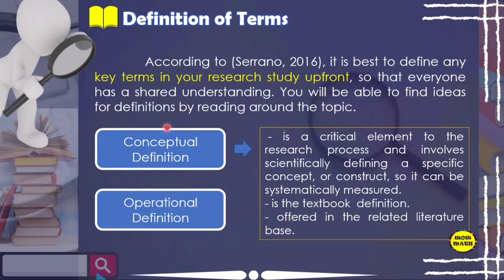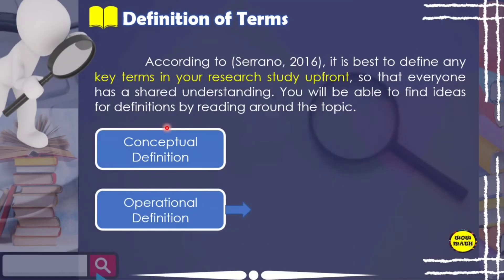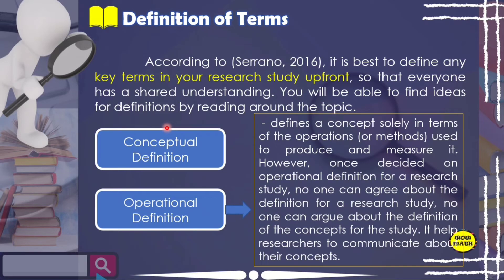In some cases there may be more than one conceptual definition of a construct. So what is the difference between operational definition and conceptual definition? When you say operational definition — sometimes called operational terms — it defines a concept solely in terms of the operation or methods used to produce and measure it. Once decided on, no one can argue about the definition of the concepts for the study. It helps researchers communicate about their concepts. The operational definition is based on how the term functions in the research — how it was made.